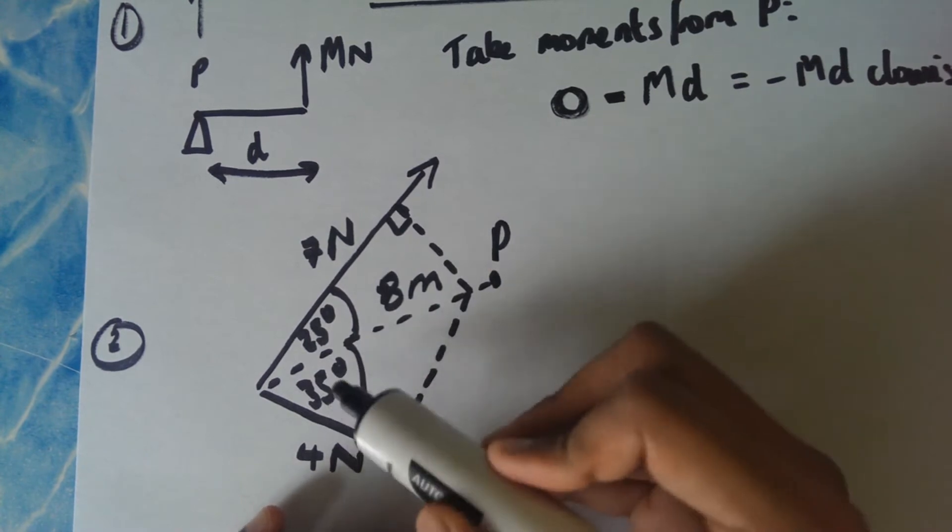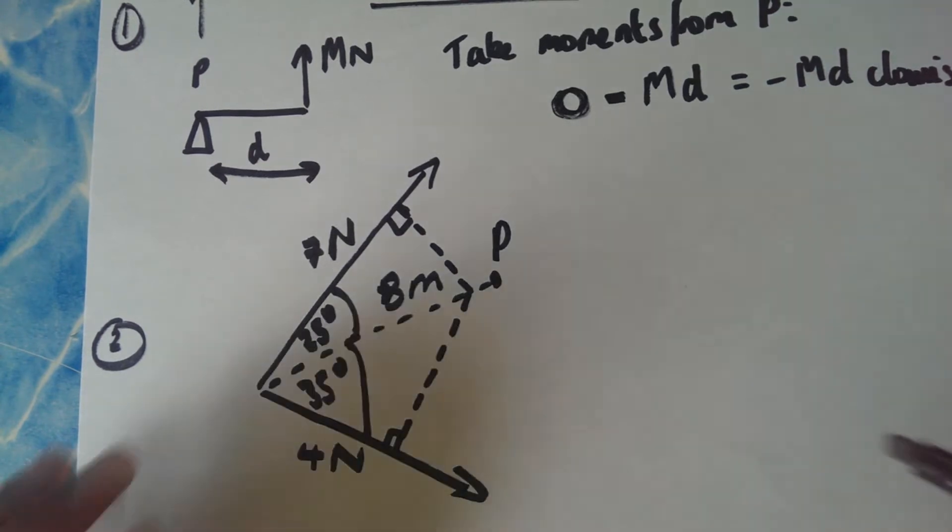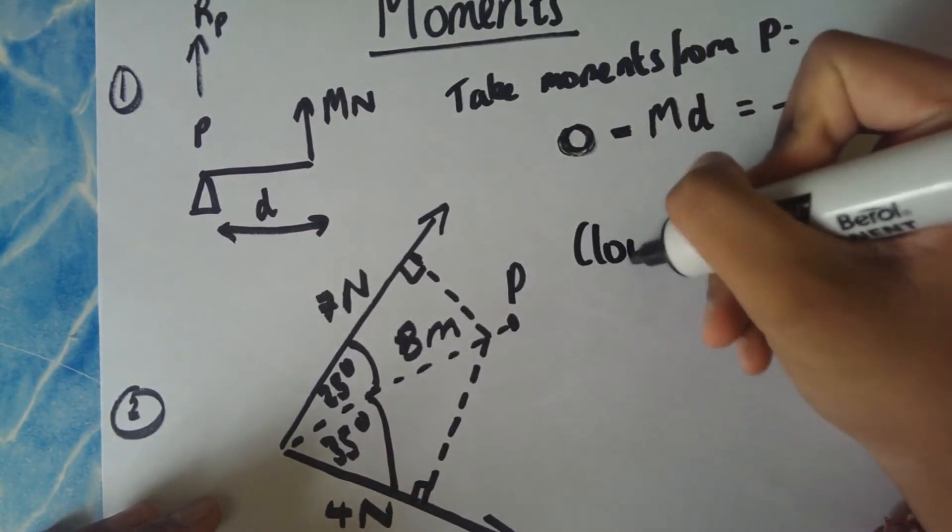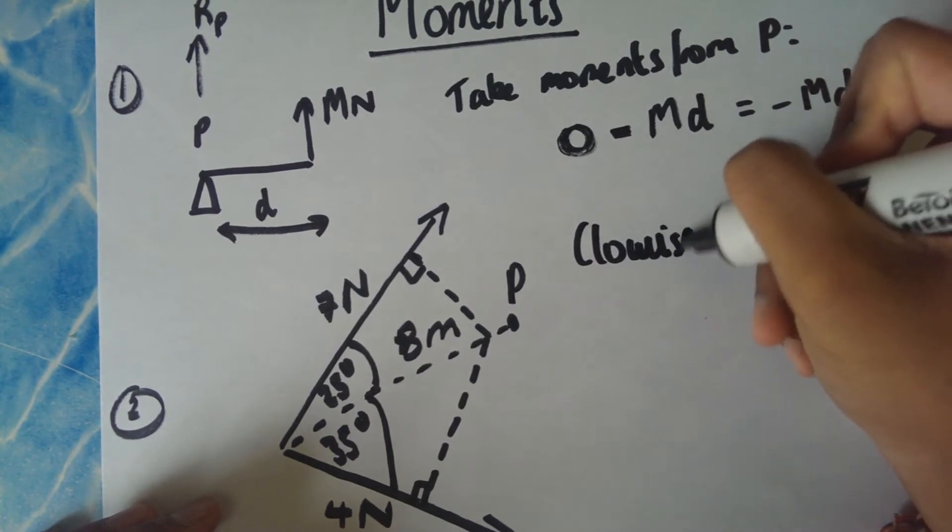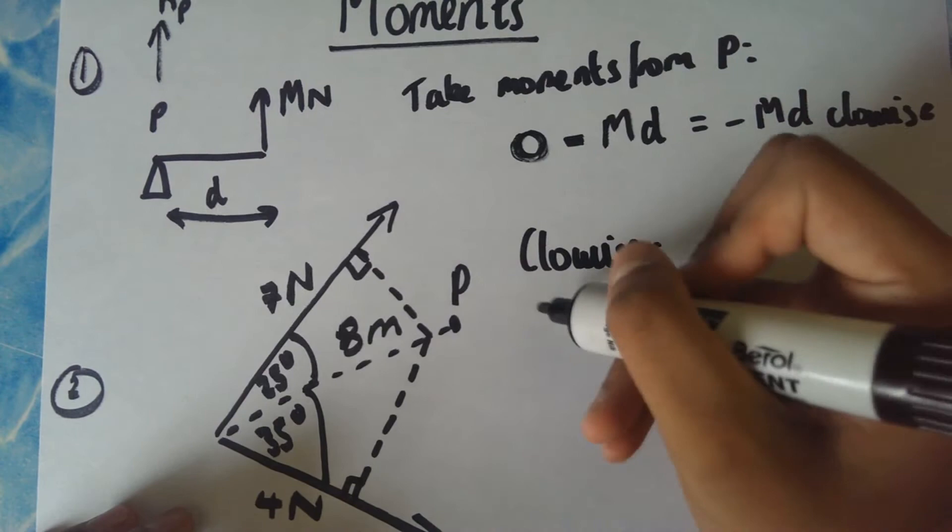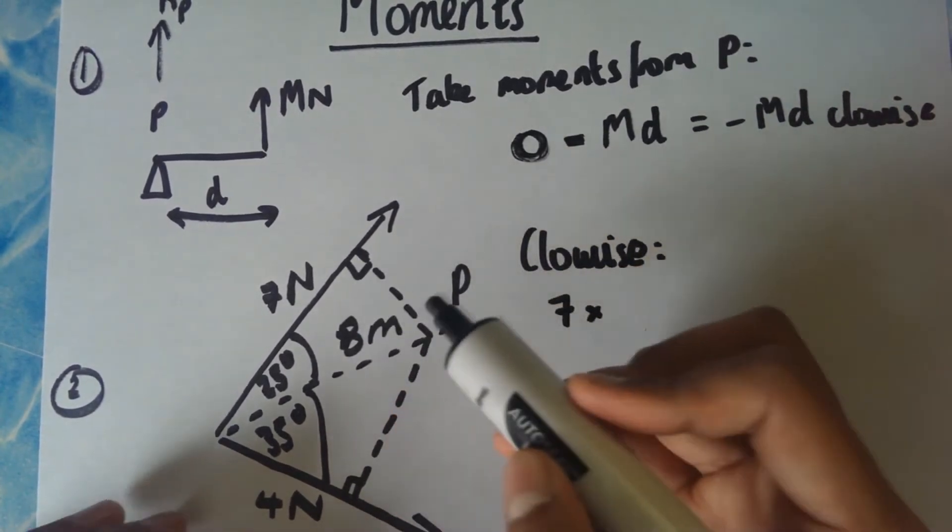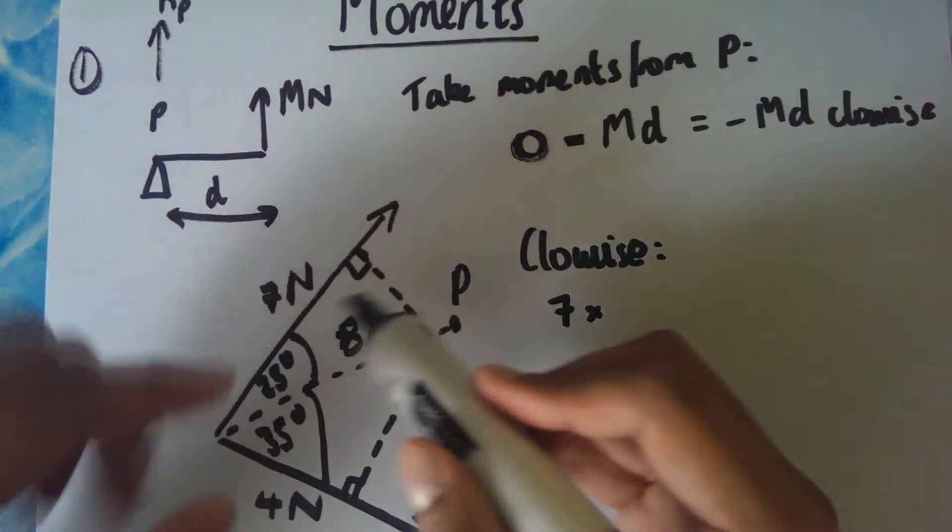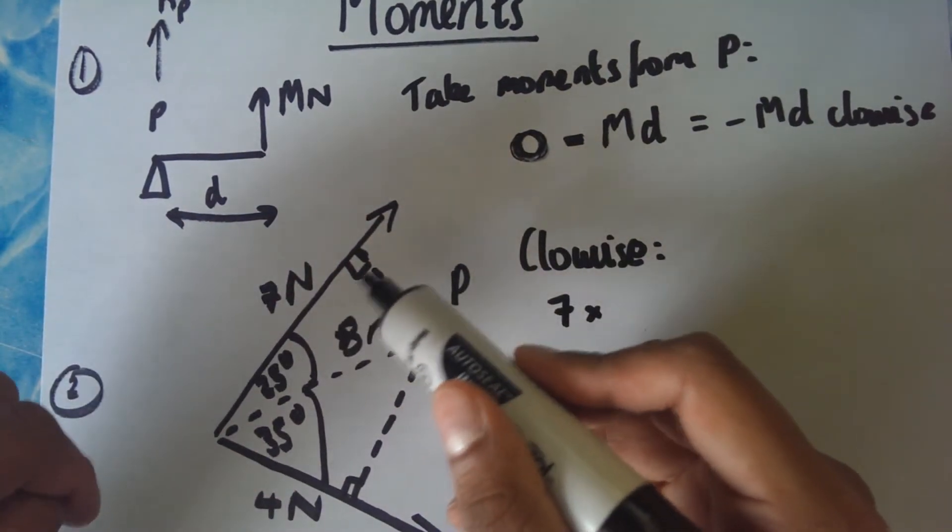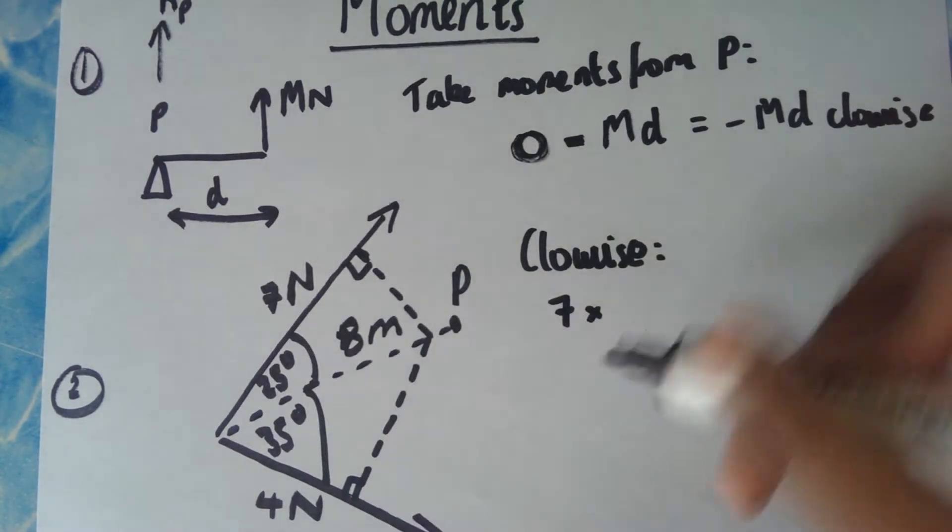So to work out the total moment of this system, we can start with the clockwise moments. So I'll write clockwise because I don't have a lot of space. The clockwise moment here will be seven times this distance here because that's perpendicular to point P, as you can see by the right angle here.